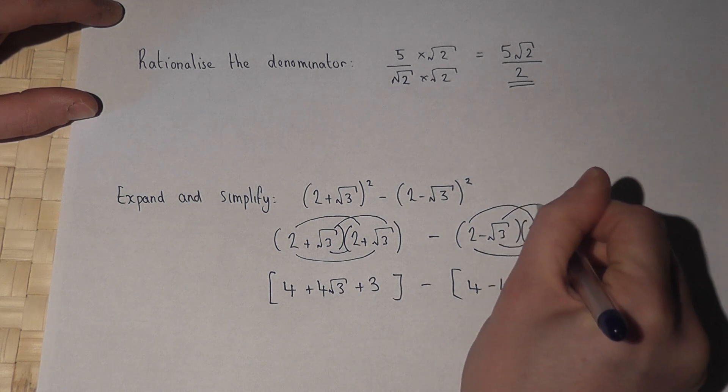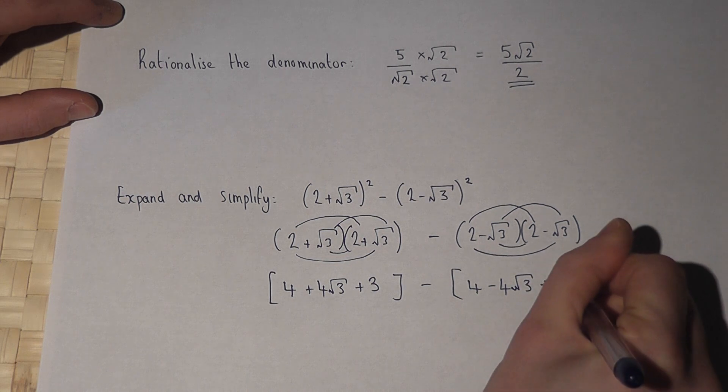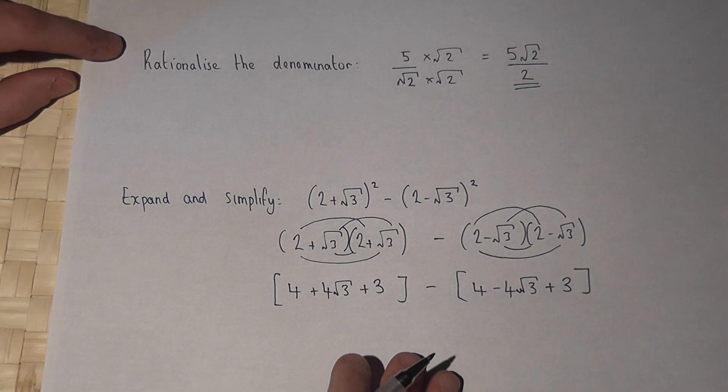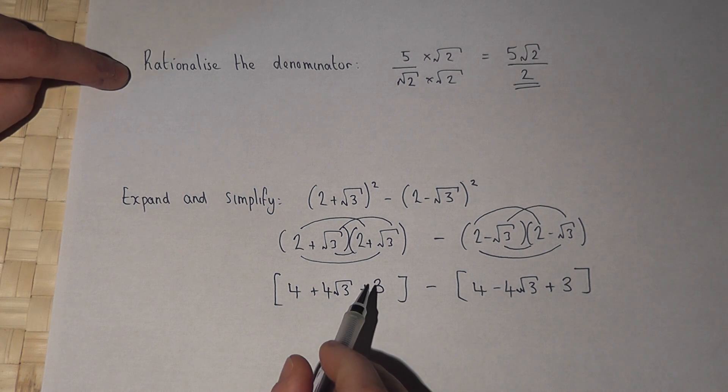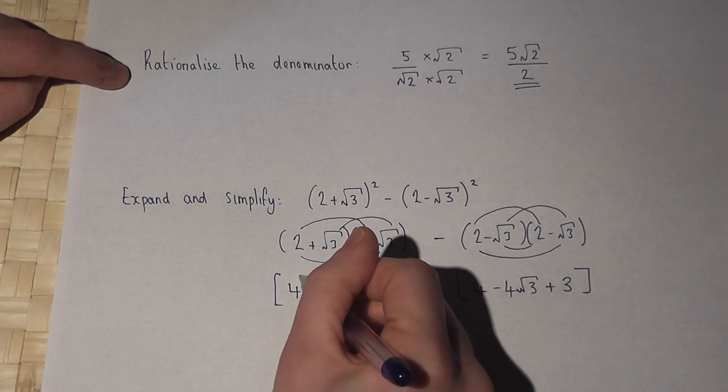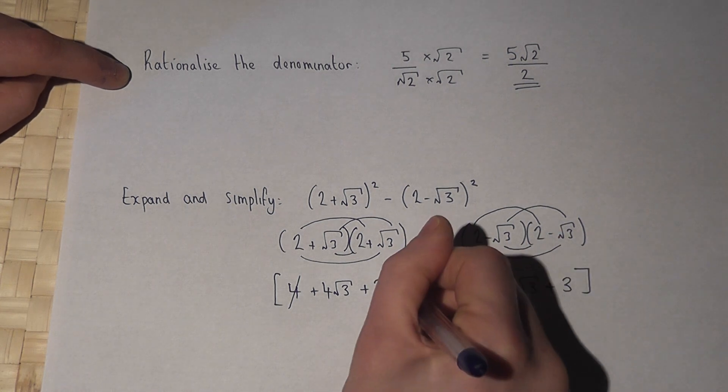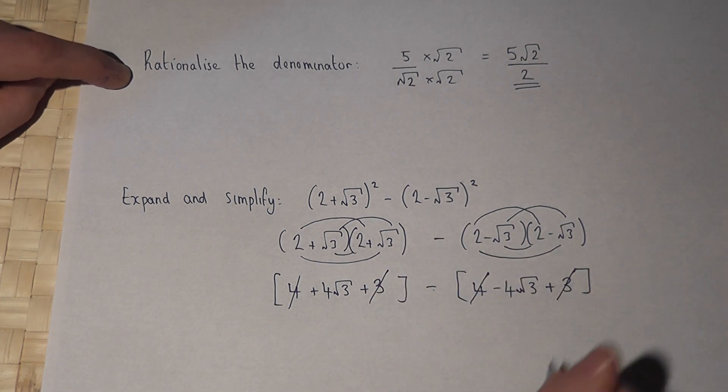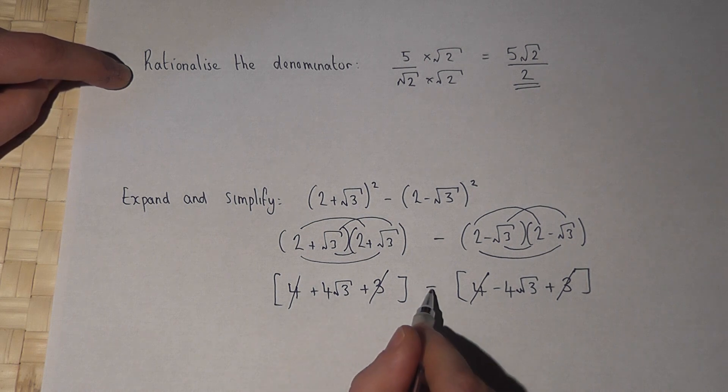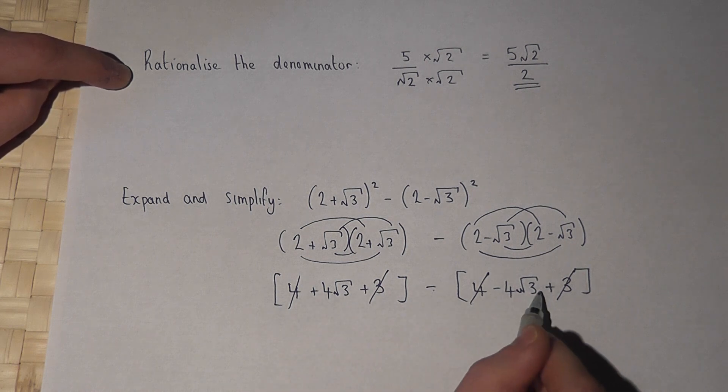There's 2 negatives, so it goes positive, so it becomes plus 3. Now a lot of things will cancel off because 4 take away 4 cancels out, as does 3 take away the 3 here. So we're left with 4 lots of root 3, take away minus 4 root 3.